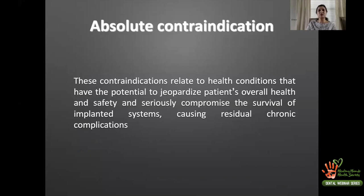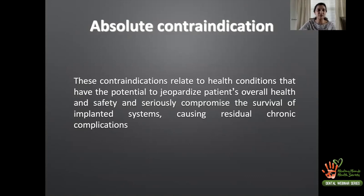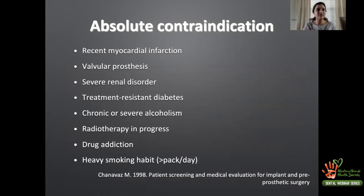Absolute contraindications relate to health conditions that have the potential to jeopardize the patient's overall health and safety and seriously compromise the survival of implanted systems, causing residual chronic complications. Some conditions considered absolute contraindications are: recent myocardial infarction, valvular prosthesis, severe renal disorders, and kidney diseases.